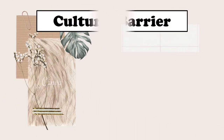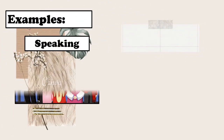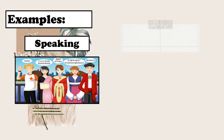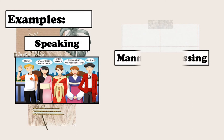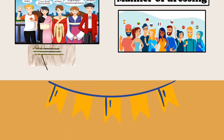Moving on to the third communication barrier, which is the cultural barrier. Cultural barriers pertain to communication problems encountered by people regarding their intrinsic values, beliefs, and traditions in conflict with others. People's culture affects the way they communicate and relate to others. Examples of cultural barriers are speaking style and manner of dressing.